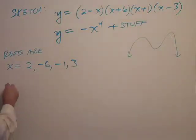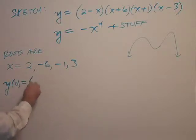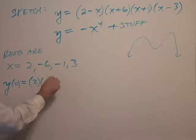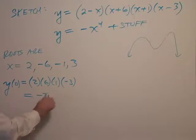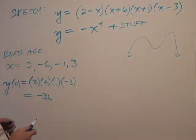And the y-intercept, y at 0. If I plug 0 in, I'm going to get positive 2 times 6 times 1 times negative 3. That would be minus 36, it looks like. Yeah. Negative 36 is the y-intercept.